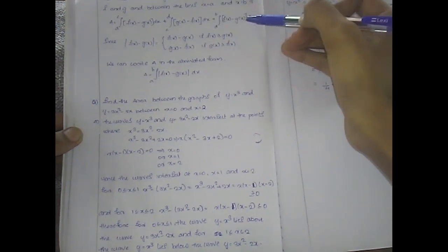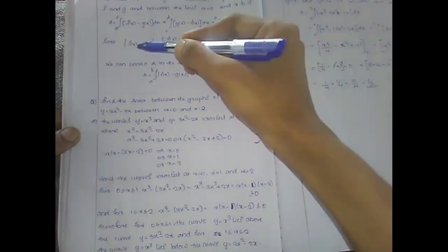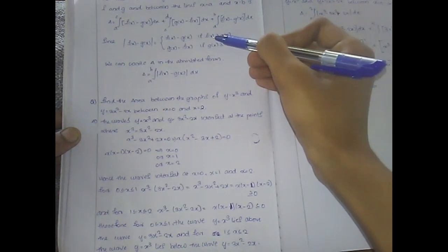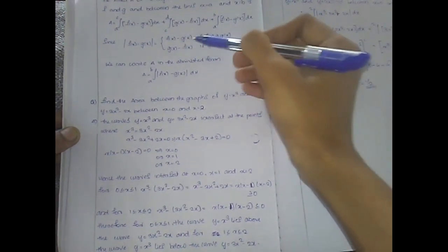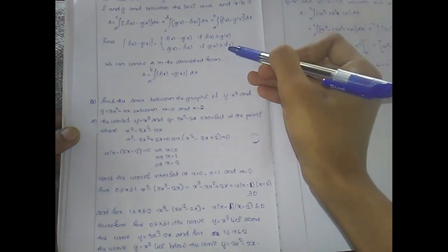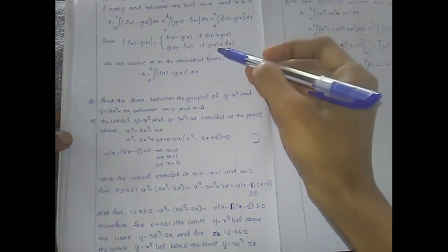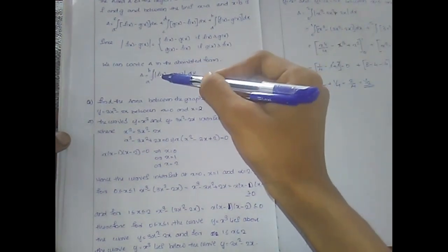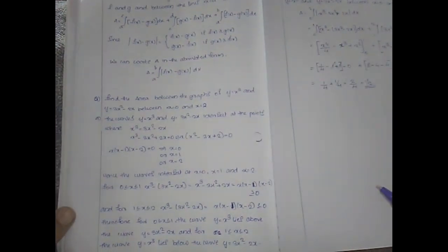The total area includes the integral from d to b of [f(x) minus g(x)] dx. In generalized form, we use |f(x) minus g(x)|, which equals f(x) minus g(x) if f(x) ≥ g(x), and g(x) minus f(x) if g(x) ≥ f(x). So the area equals the integral from a to b of |f(x) minus g(x)| dx.